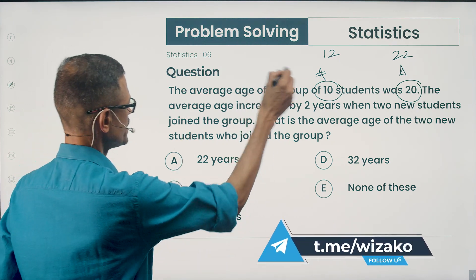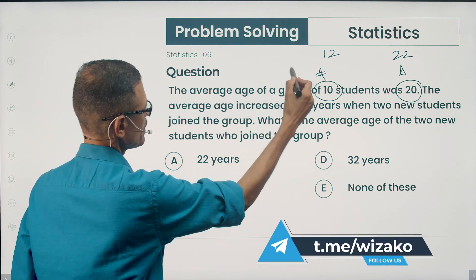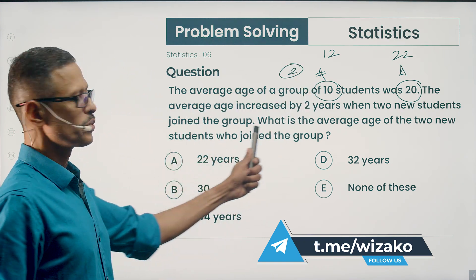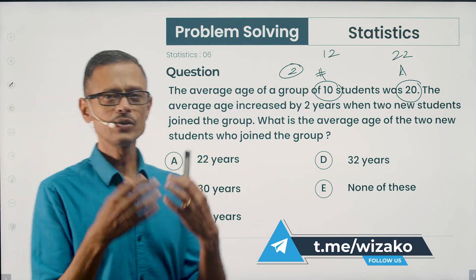What is the average age of these two new students? The 10 becoming 12. We had two students joining. What is the average age of the two new students who joined the group? We're going to use the standard framework.